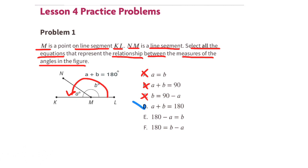E. 180 minus A equals B. Yes, that's true, because A plus B equals 180, so 180 minus A equals B, just like B equals 180 minus A. F. 180 equals B minus A. No, that's not true, because we know that 180 equals B plus A, not B minus A.